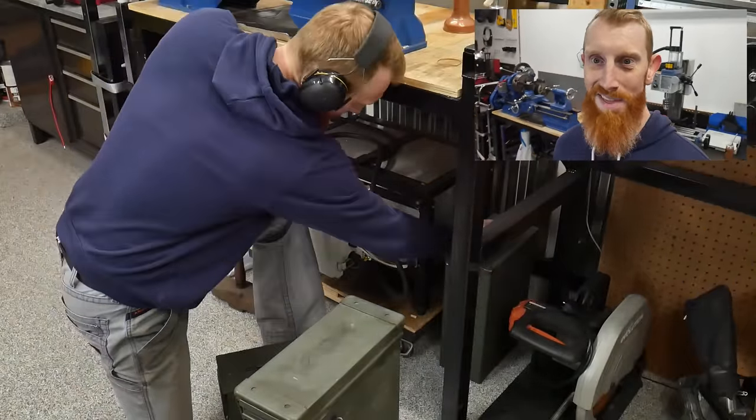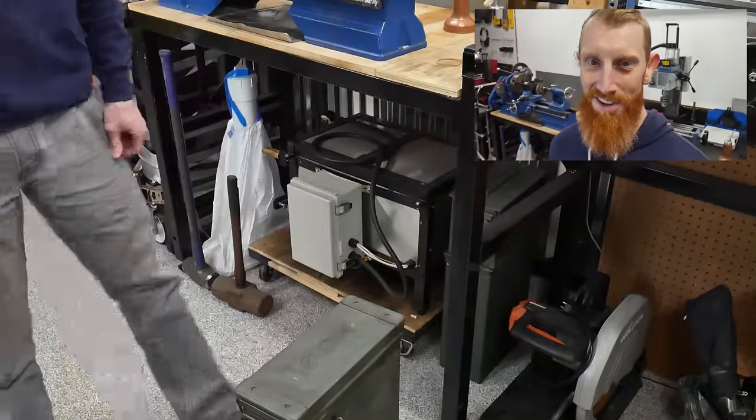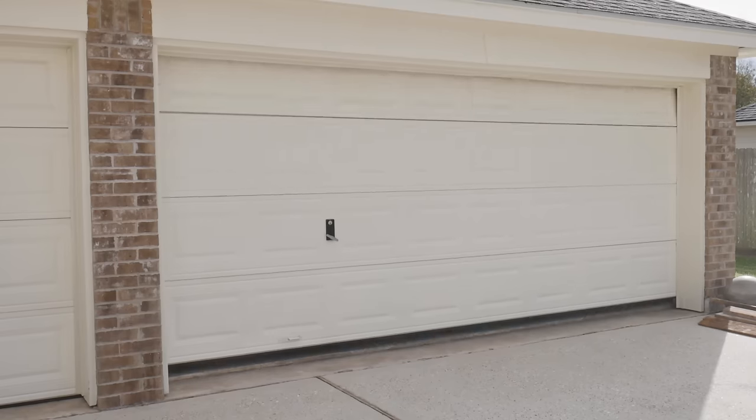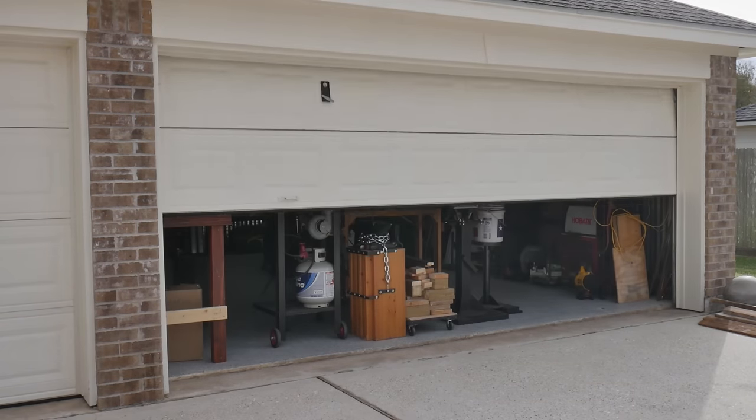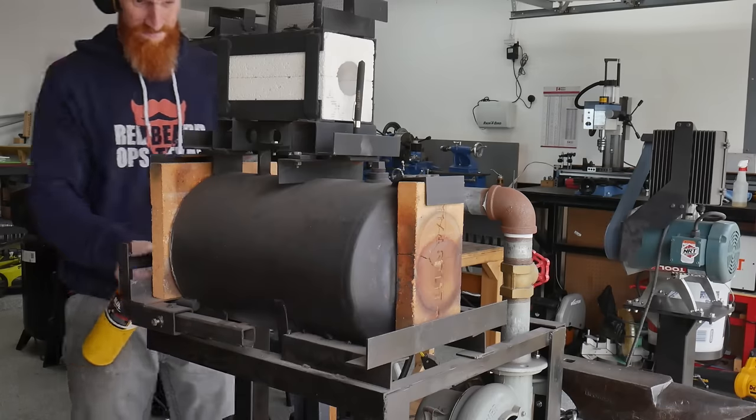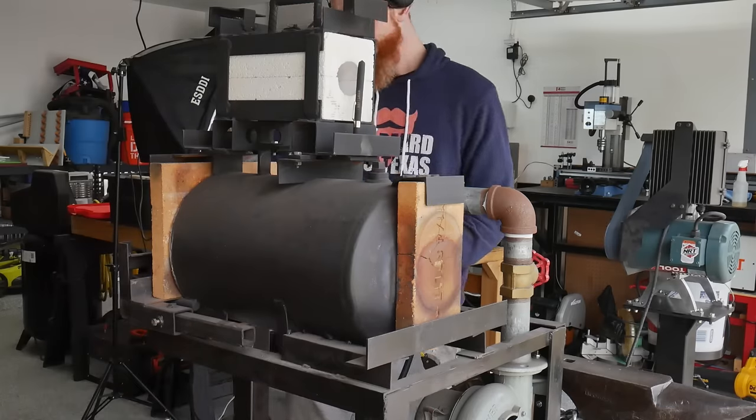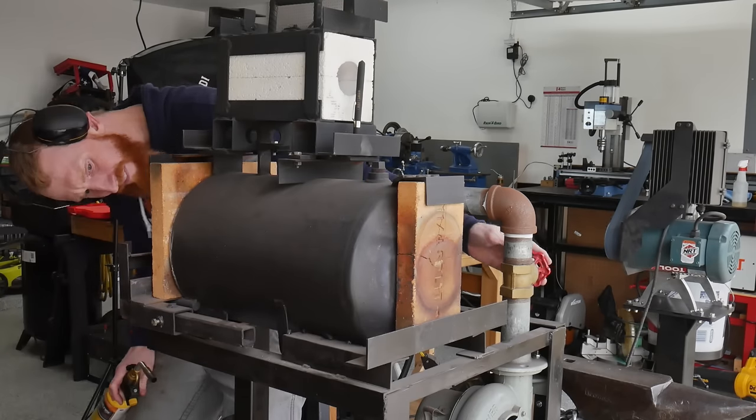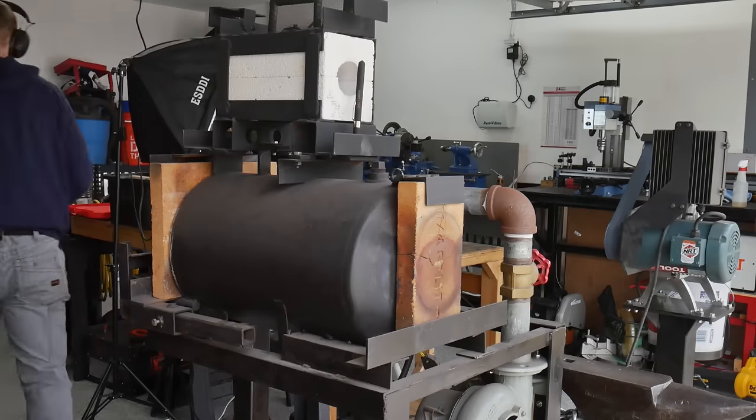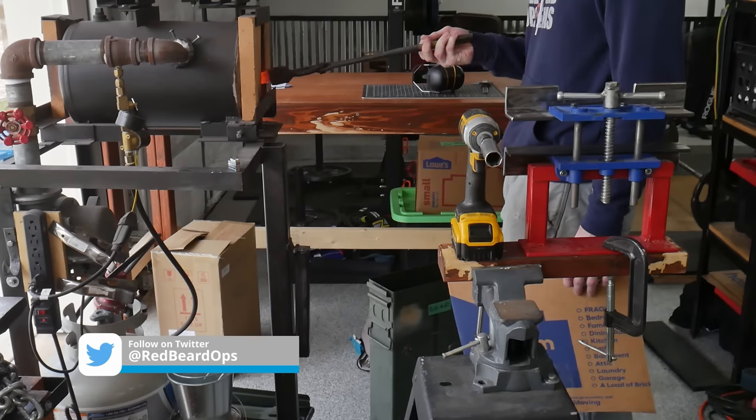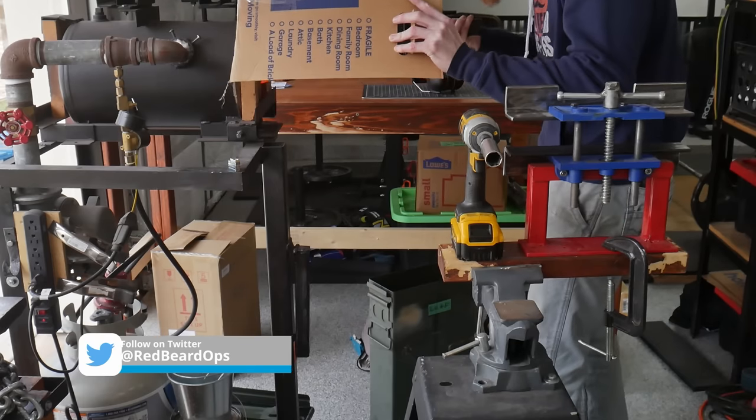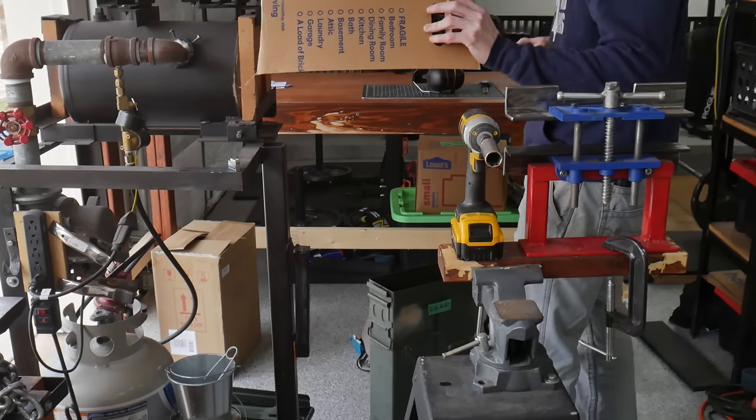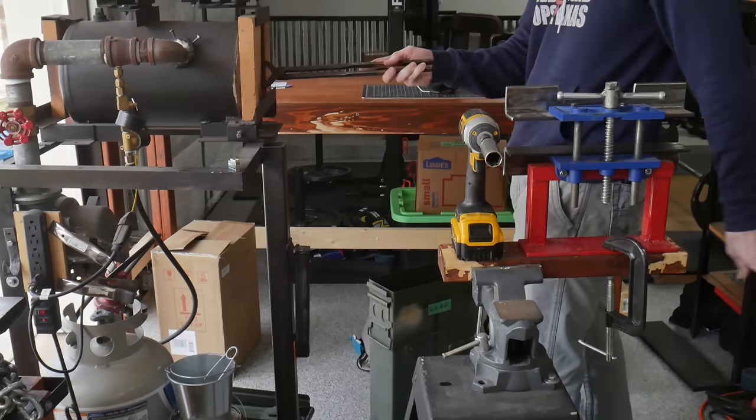While the control provided by a heat treating oven is obviously superior to the forge, our ancestors have been making high quality usable blades for thousands of years without electricity. Our chances of success increase greatly by using a forgiving steel like 1084, a magnet to judge temperature, and an industrial heat treating oil like Parks 50.